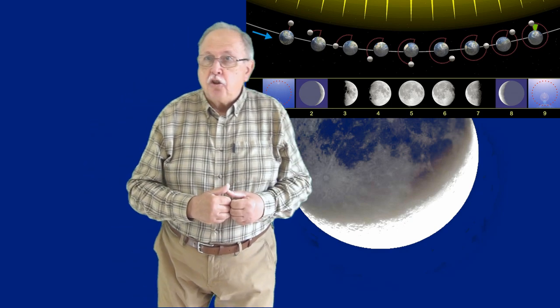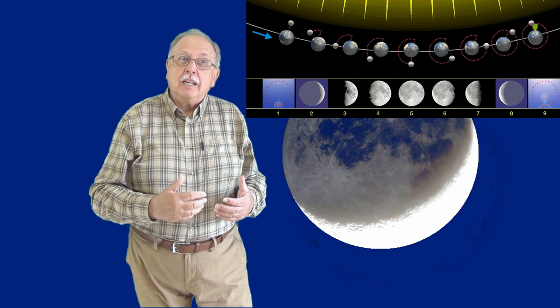Discul pământului este total luminat de soare. Iar când noi avem lună plină, poziția 5, pe lună este faza de pământ nou. Se vede partea pământului pe care e noapte.